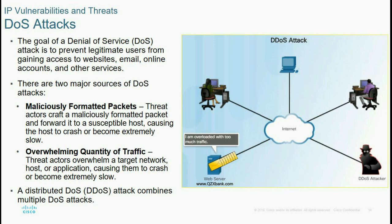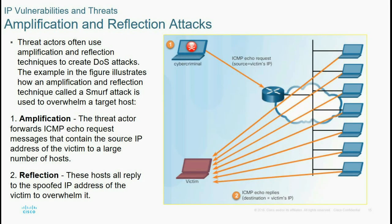Denial of Service (DoS) is one of the IP vulnerability attacks. The goal of a DoS attack is to prevent legitimate users from gaining access to websites, email, online accounts, and other services. There are two major forms of DoS attacks: first, maliciously formatted packets; second, an overwhelming quantity of traffic. Threat actors craft malicious formatted packets and send them to a suspected host, causing it to crash or become excessively slow.